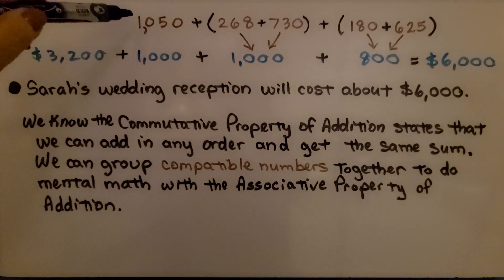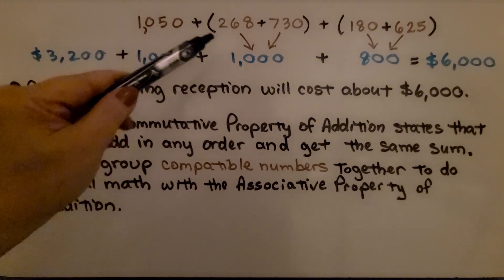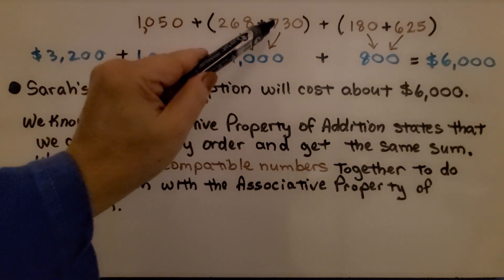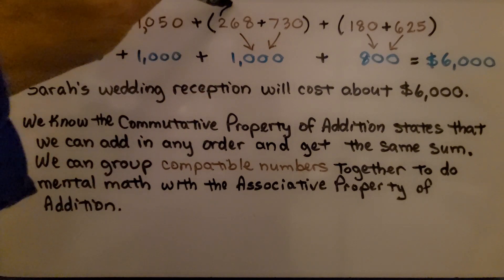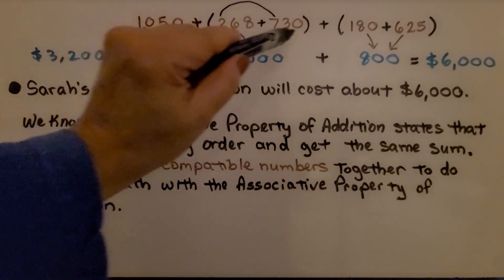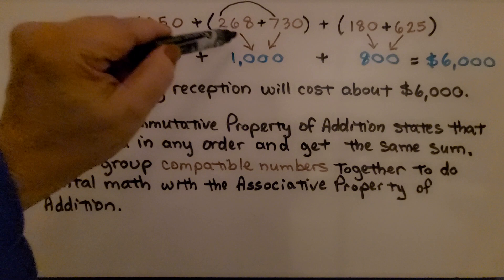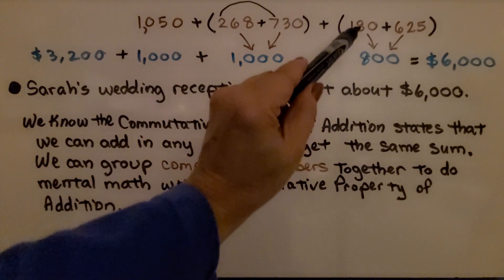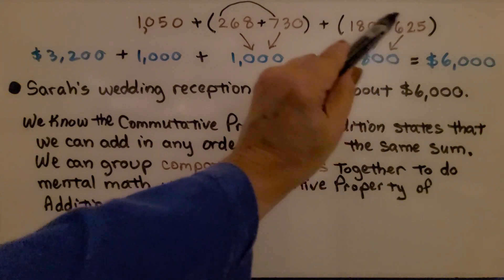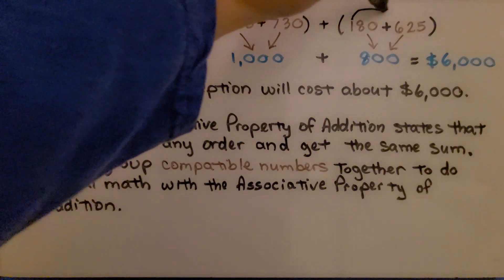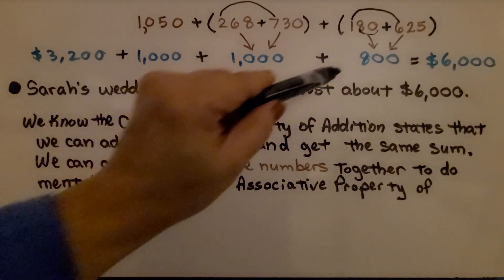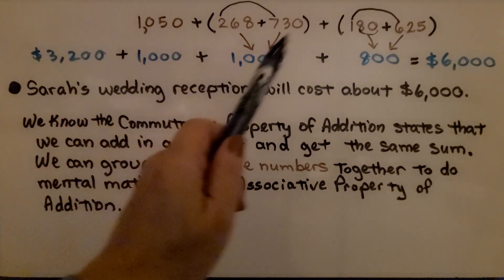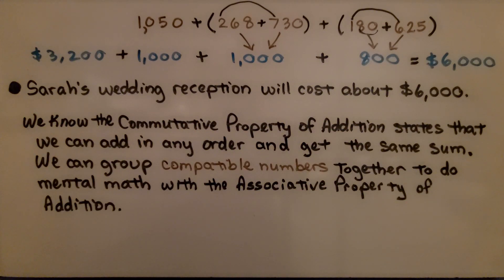We round $1,050 to $1,000. We group $268 plus $730: 200 and 700 make 900, and $68 plus $30 is about $100, so that's about $1,000. Then $180 plus $625: $100 and $600 make $700, and $80 plus $25 is about another $100, making about $800. Adding all groups together gives approximately $6,000. So Sarah's wedding reception will cost about $6,000.